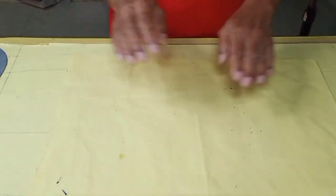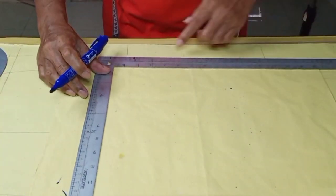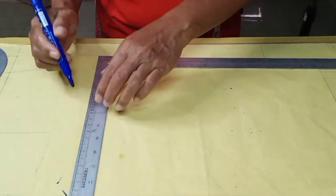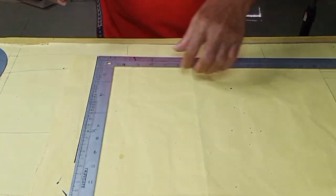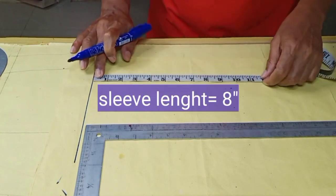Without further ado, let's start drafting our sleeve pattern. Draw a perpendicular line based on the edge of pattern paper. This serves as our baseline. And from baseline, measure 8 inches, which is the sleeve length measurement.